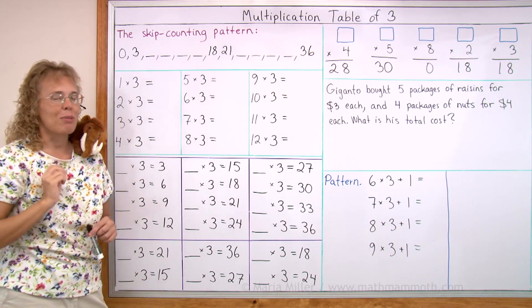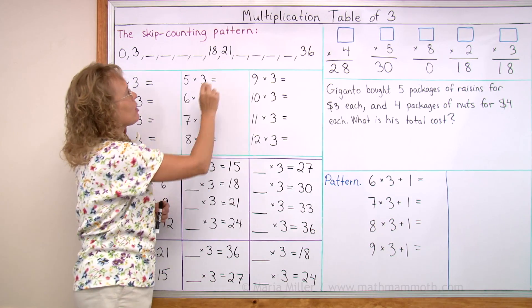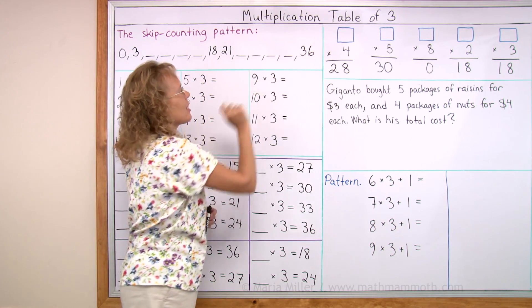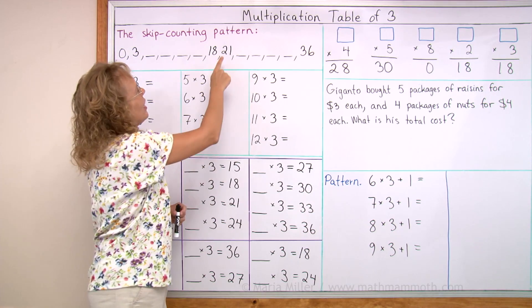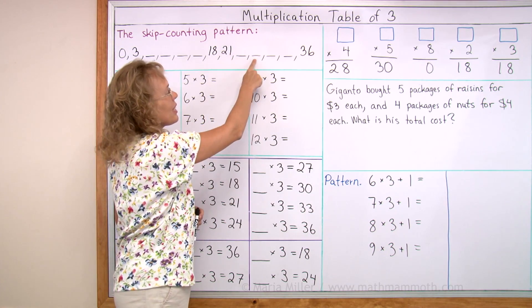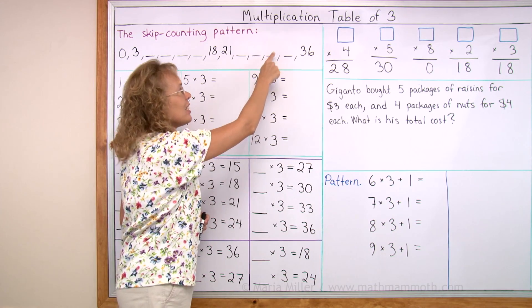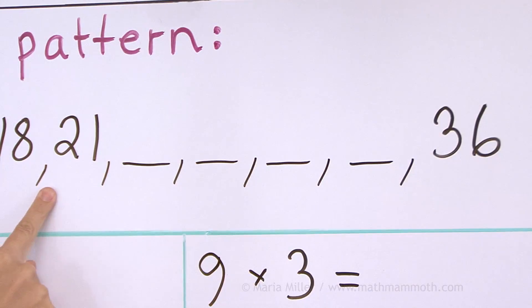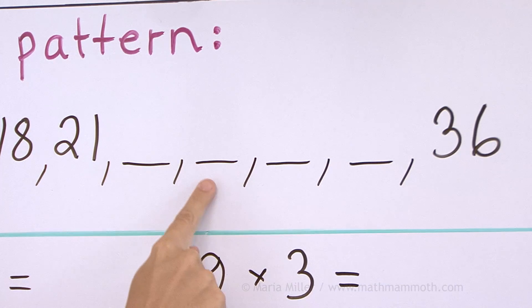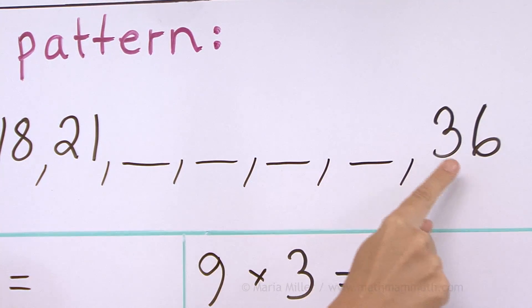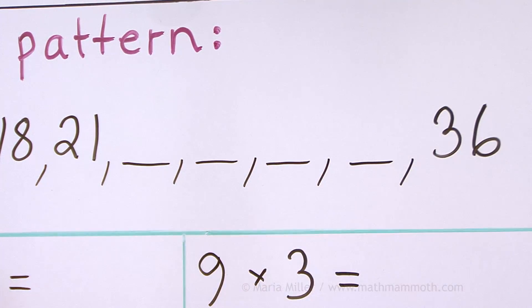Now we'll do the second half from 21 till 36: 21, 24, 27, 30, 33, and 36. And your turn: 21, 24, 27, 30, 33, 36. And your turn. 21...